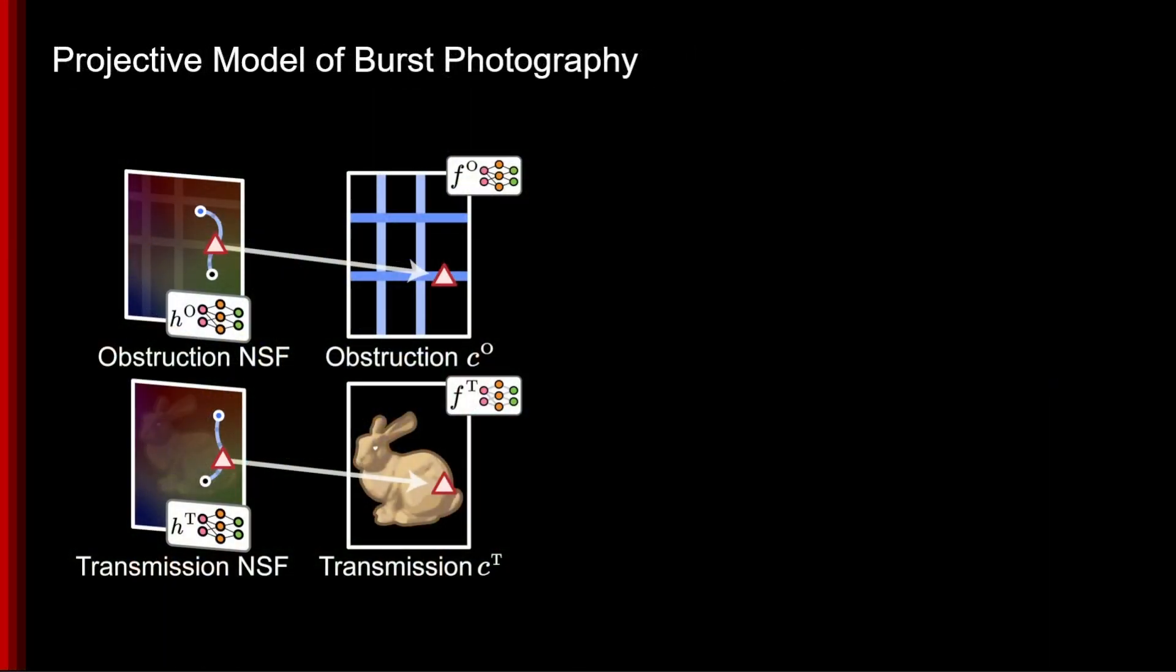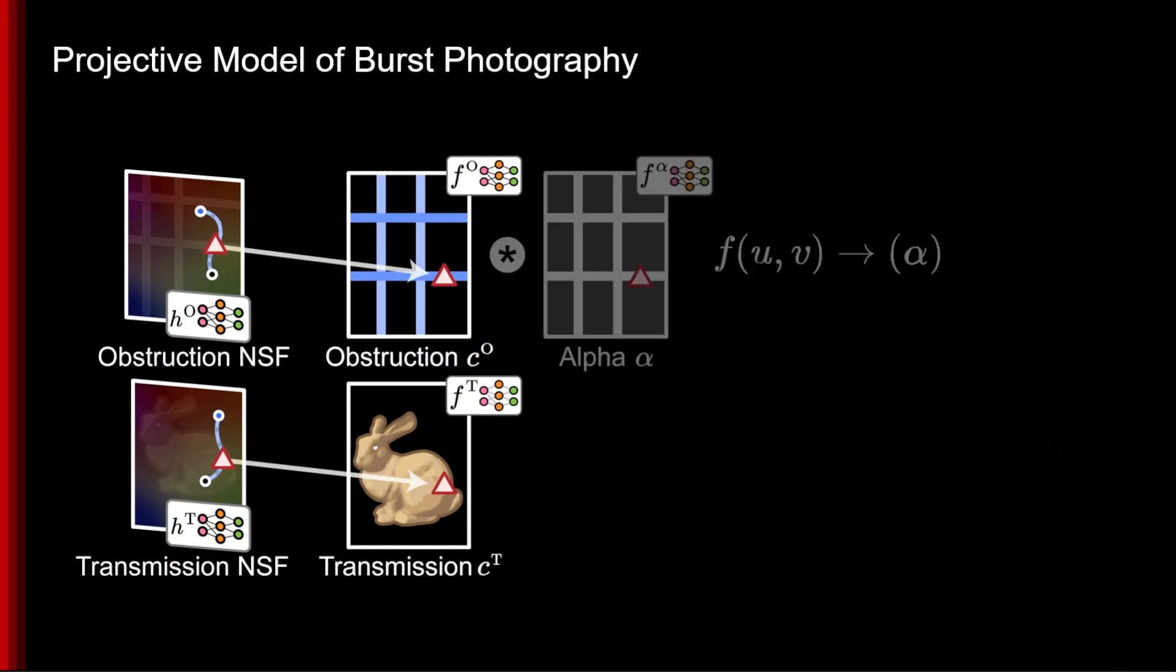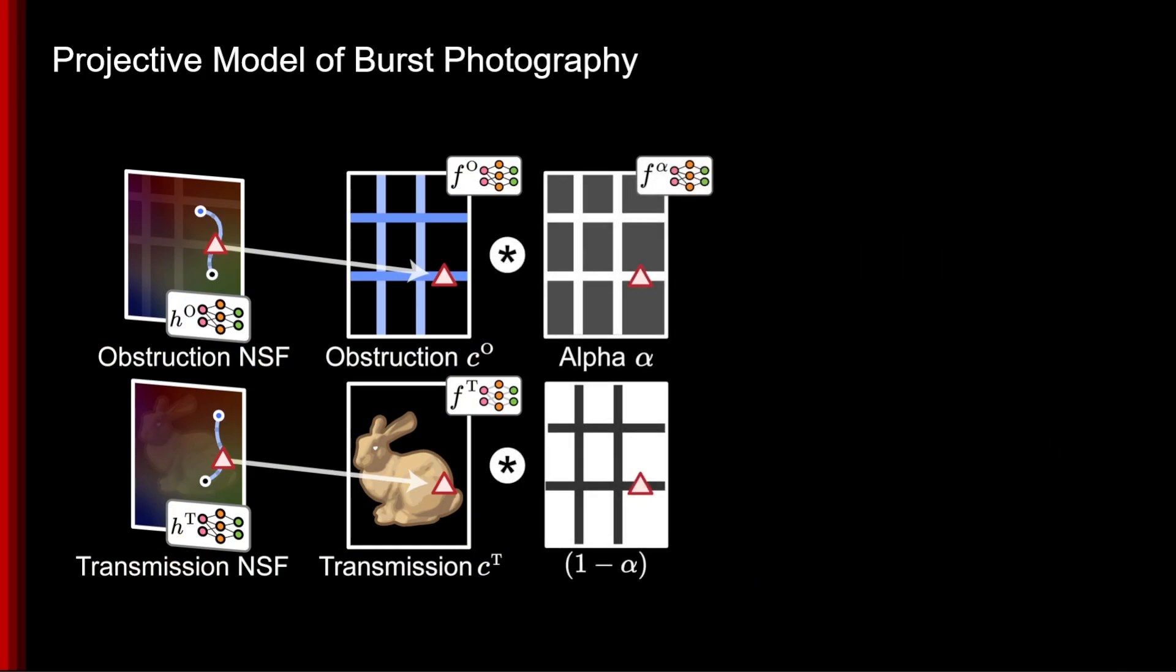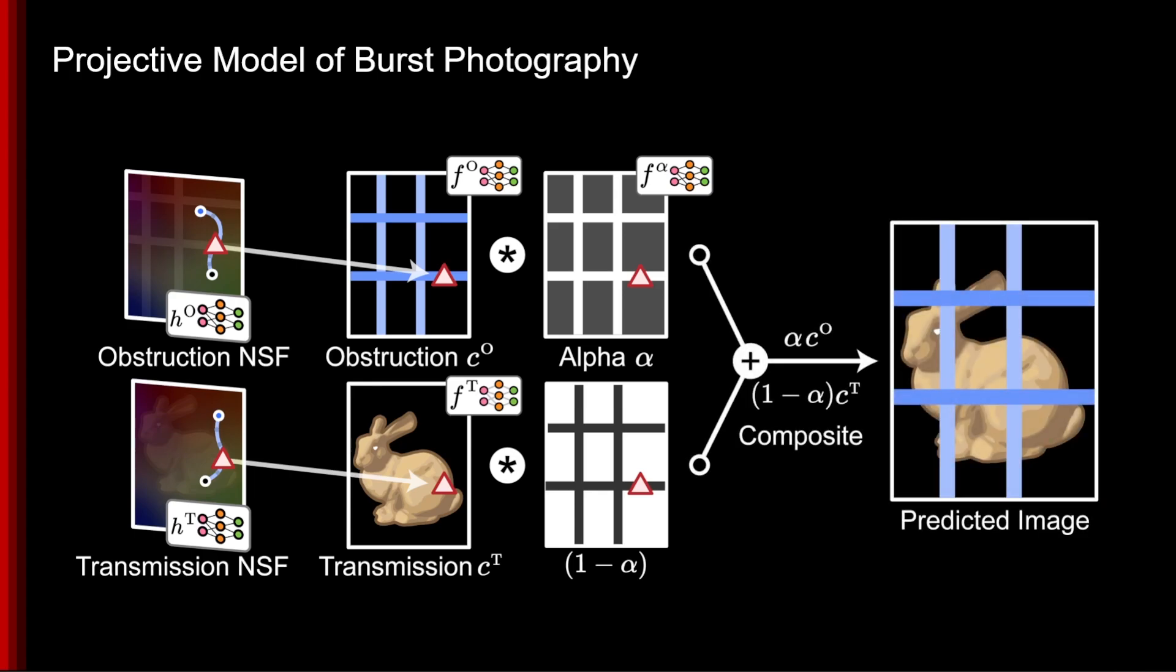Returning to our two-layer model, we multiply the obstruction layer by a learned alpha mat, multiply the transmission by its inverse, and then composite the two together to produce the output image. Our only regularization penalty being an optional weight on the alpha mat to control how much of the scene is modeled by the obstruction layer.